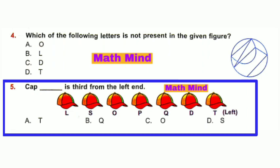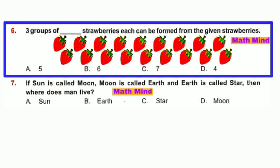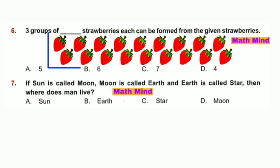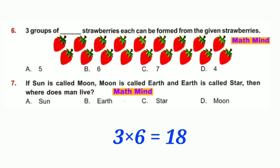Question number 5: Cap is third from the left end. This is the left end, so third from the left end is Q. Option B is correct. Question number 6: Three groups of strawberries each can be formed from the given strawberries. There are total 18 strawberries. Making 3 strawberries in each group, we can form 6 such groups. 3 times 6 equals 18. So, option B is correct.